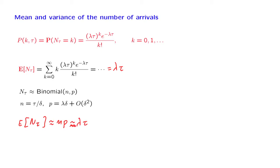This second equality here is approximate because we're neglecting this order of delta squared term. Now, these approximations are increasingly exact as we let delta go to 0. And when we take the limit as delta goes to 0, we see that the expected value of a number of arrivals in the Poisson process will be equal to lambda tau.